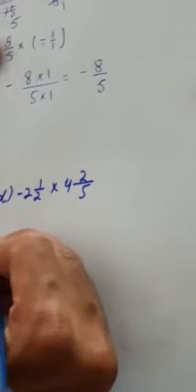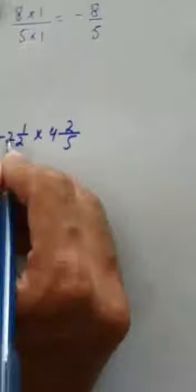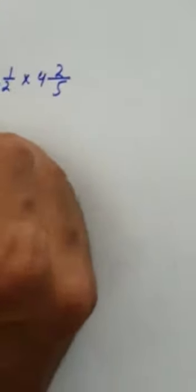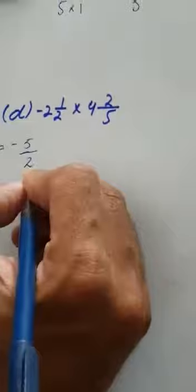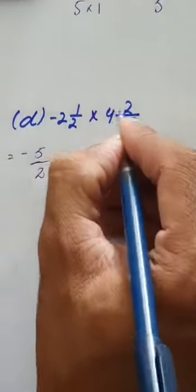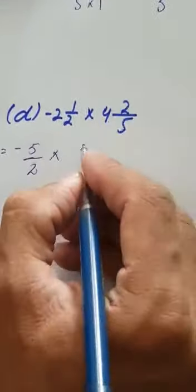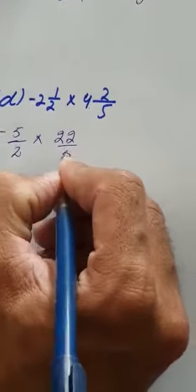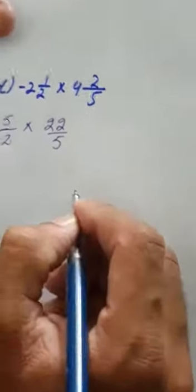In part D of question number 5, we are given minus 2 and 1 over 2 multiplied by 4 and 2 over 5. First we dissolve the mixed forms: 2 twos are 4, plus 1 gives 5, so minus 5 over 2; and 4 fours are 20, plus 2 gives 22, so 22 over 5.